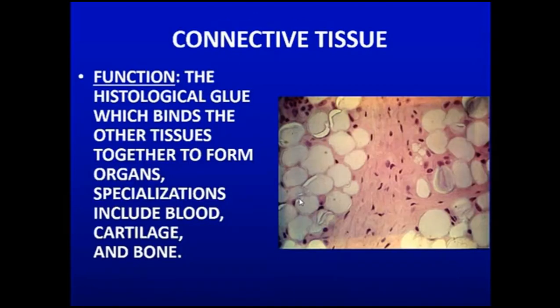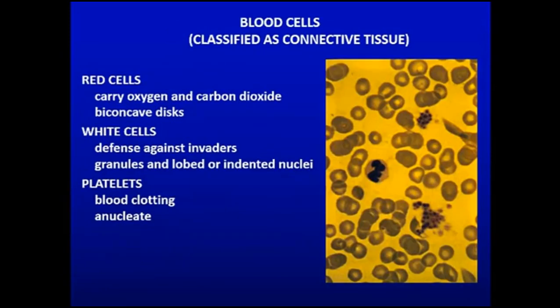Connective tissue is histologic glue — it holds things together. We see some fat cells here; there's the nucleus and there's the fat droplet inside the cell. Fibroblastic-type cells bind things together and organize things. Specialized connective tissue includes blood, cartilage, and bone.